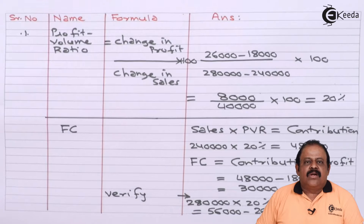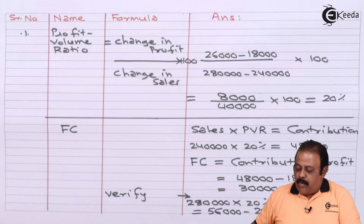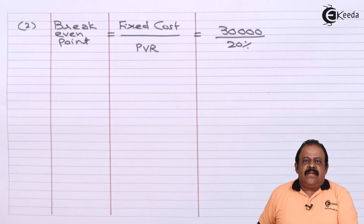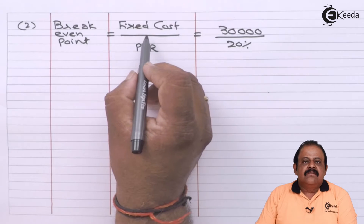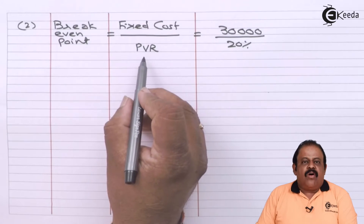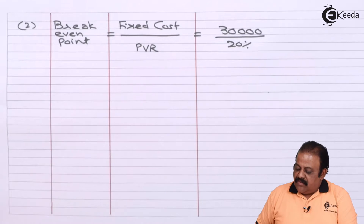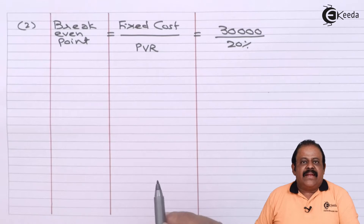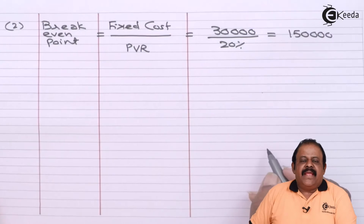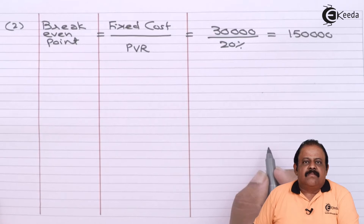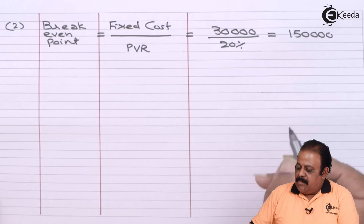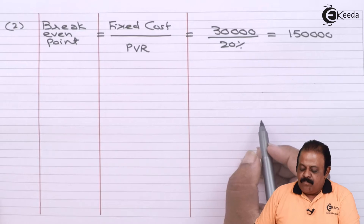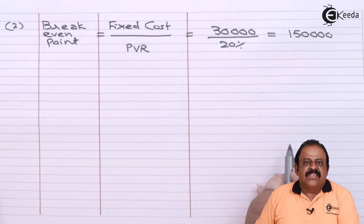Now we can calculate the break-even point. The formula is fixed cost divided by PV ratio. Fixed cost is ₹30,000 divided by 20%, giving a break-even point of ₹1,50,000. This is the level of sales where the business makes neither profit nor loss.